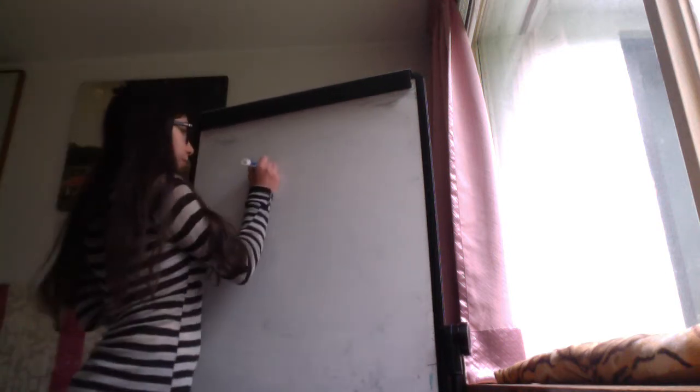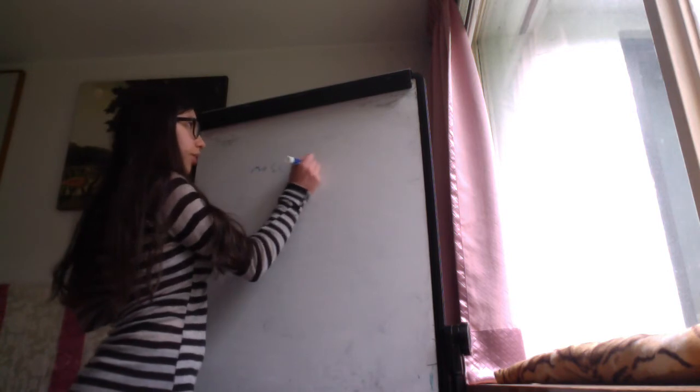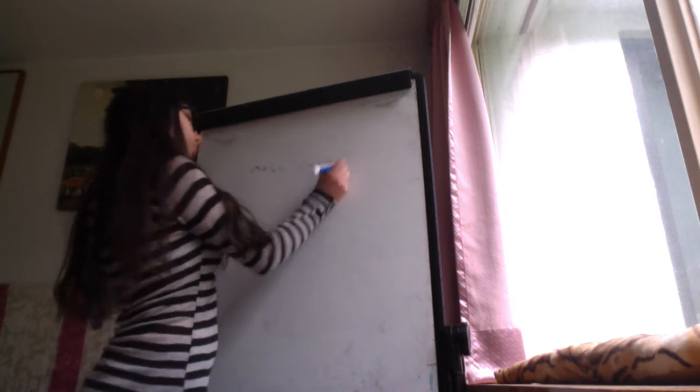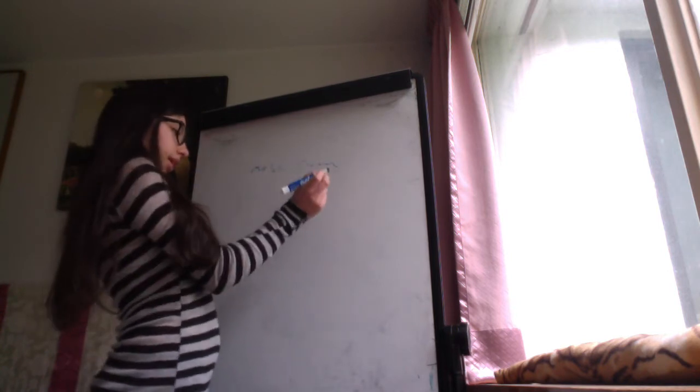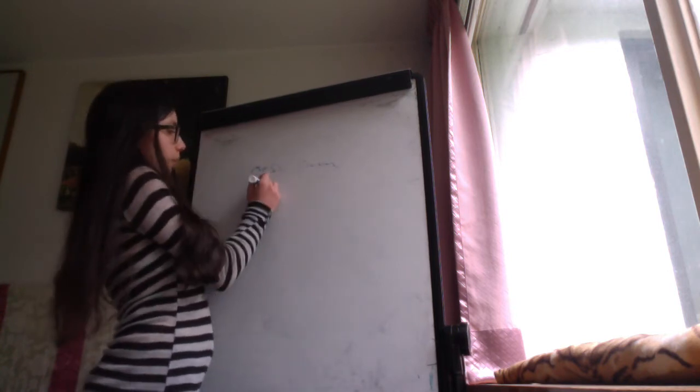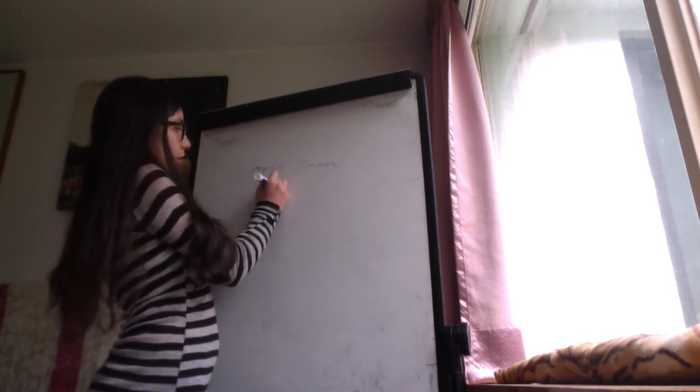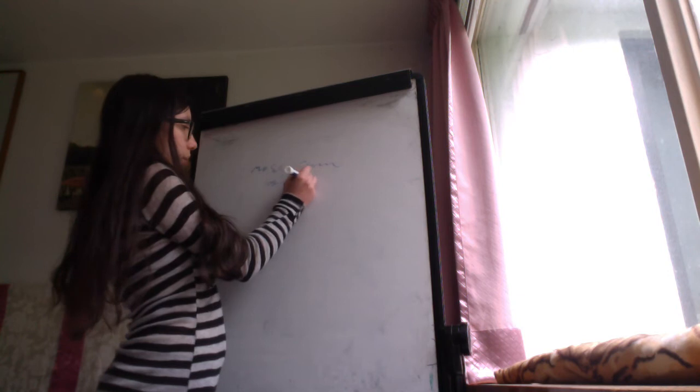Now we're going to see the C7 radiculopathy. This is the most common radiculopathy. Usually the patient has no history of trauma.